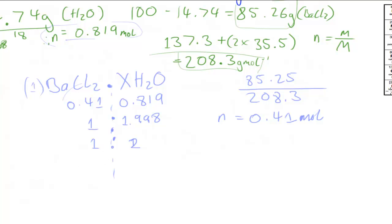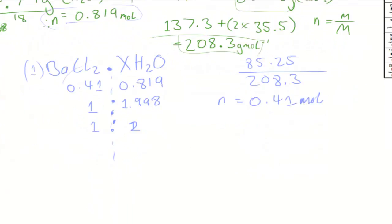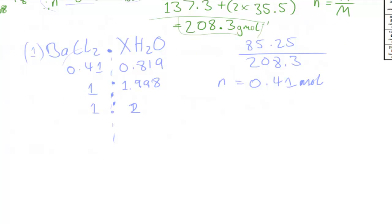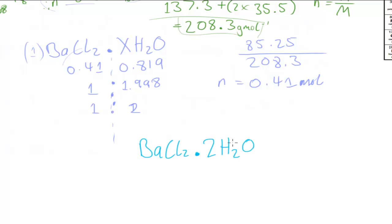So the formula of the hydrated salt — as asked — is BaCl₂ · 2H₂O. X equals 2.